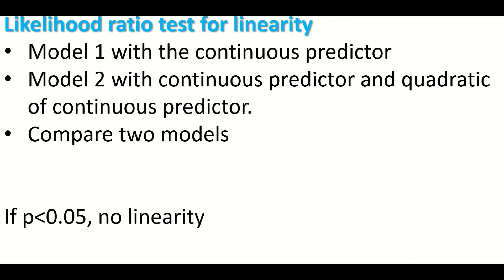To perform the test, first generate a hypothesis, then use the likelihood ratio test for linearity. To do that, you need to generate a first regression model containing only the continuous predictor along with any other predictors. Then generate a second model which contains the continuous predictor and a transformed form — specifically the quadratic form — of that continuous predictor.